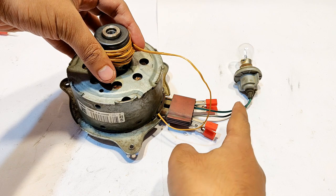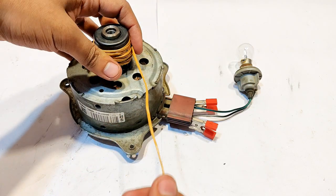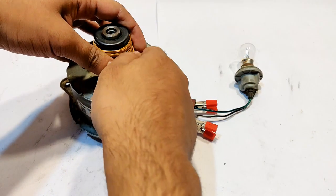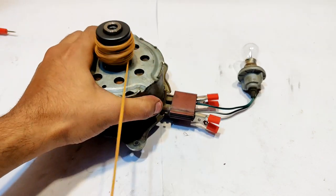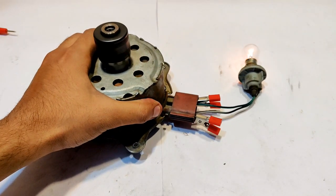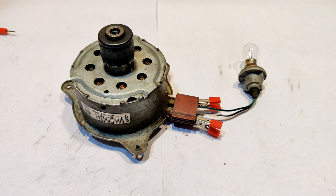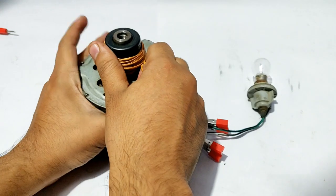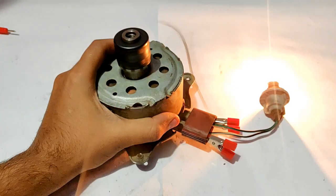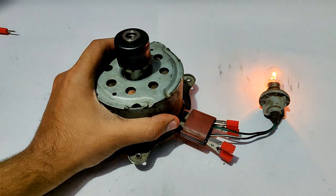Here as you can see, I have connected this car indicator bulb to this motor generator. Let's see how much it can glow. You can see that it is working. Let's turn off the lights and retest it. Whoa.